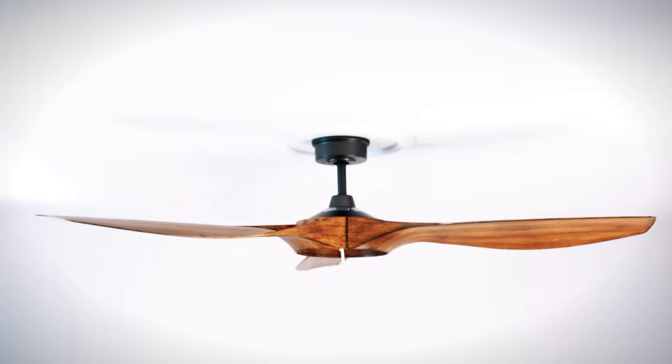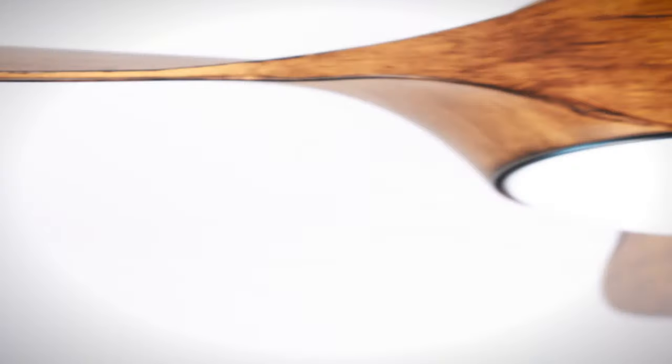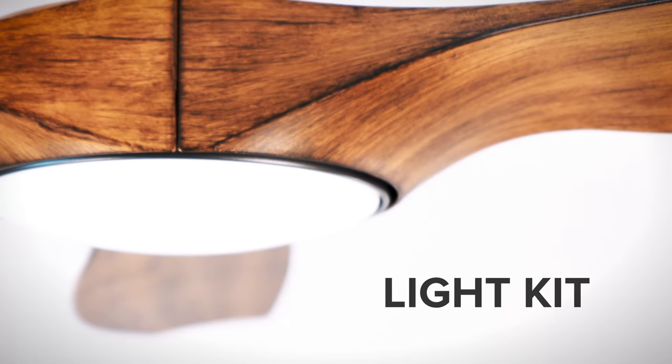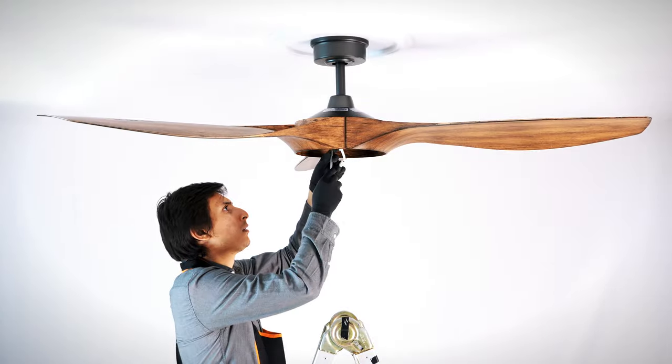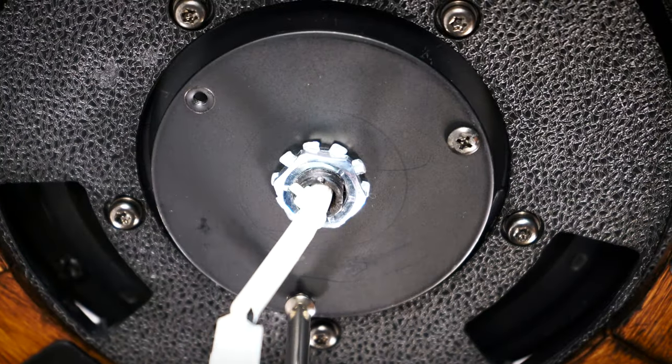The light kit assembly can now be installed. On the motor's mounting ring, remove one of the screws and loosen the remaining screws.